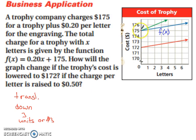And now, if we look at our green line here, it doesn't change the starting value or the cost of the trophy, but it does change how much each letter costs. So, two letters would be a dollar, so it is steeper. So, it's a rotation about the point (0, 175) and it is steeper.